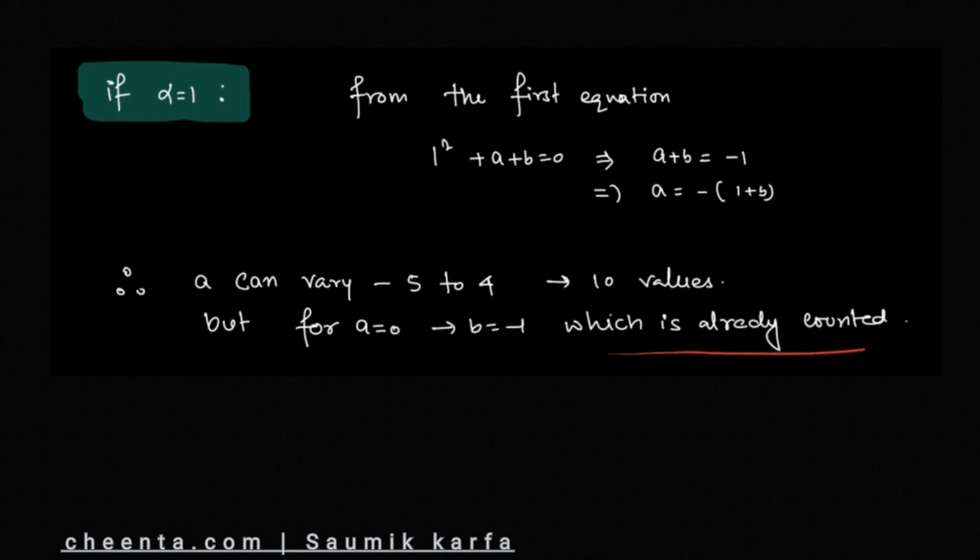which was already counted in the previous case. So we get 9 new values from here. There are 9 values for the ordered pairs (a,b). Earlier we got 6, now 9 more.